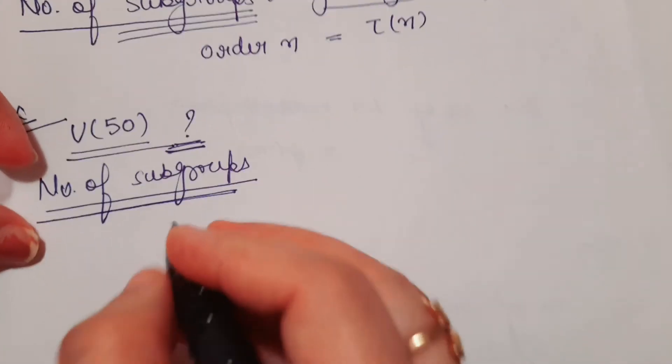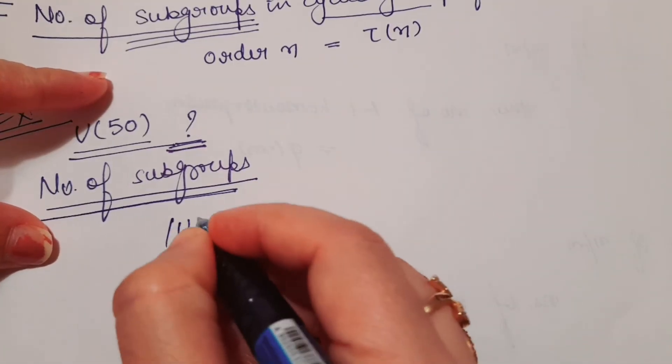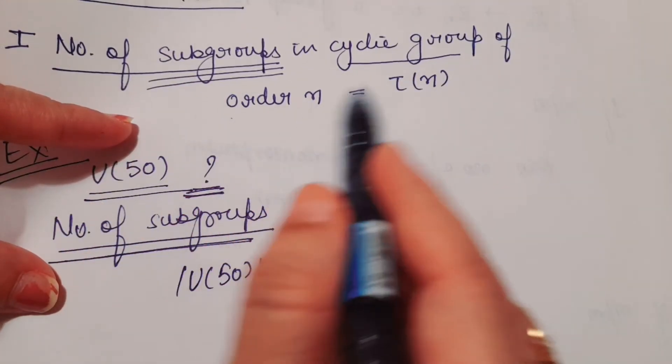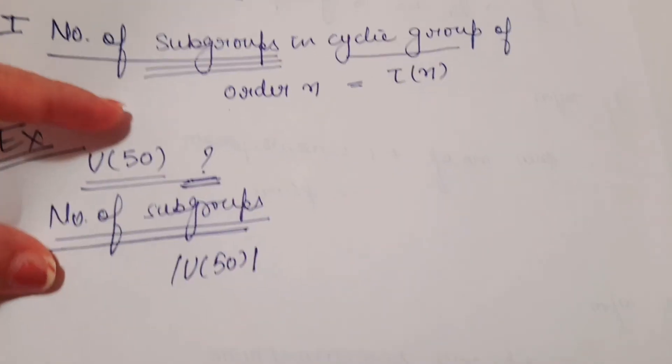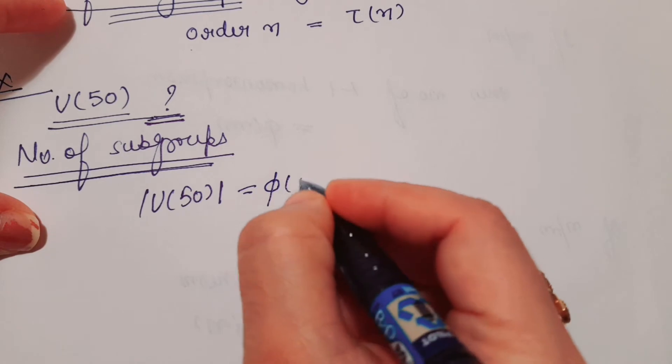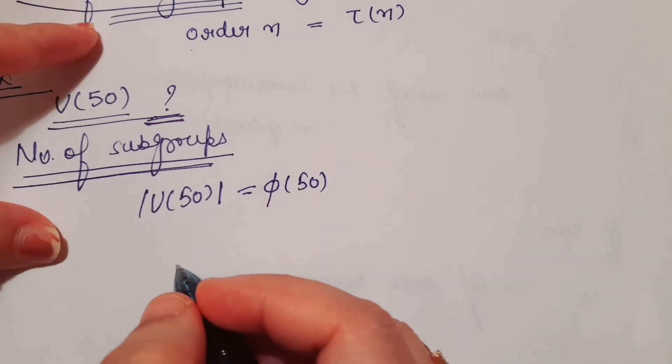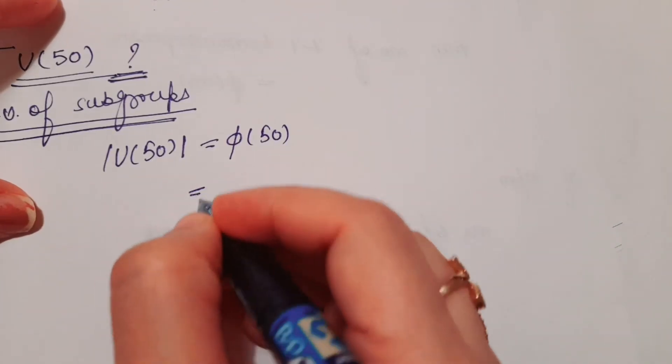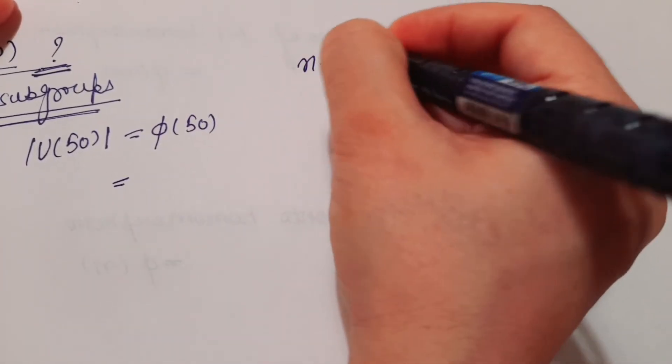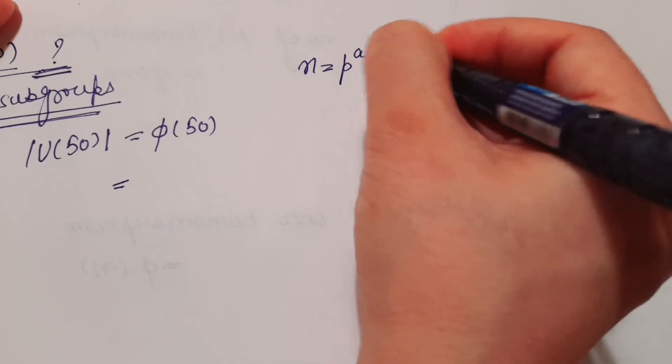For that, we should know the order of U(50), because the number of subgroups in a cyclic group of order n is τ(n). So what is the order of U(50)? The order of U(50) is φ(50). Can you calculate φ(50)? Yes, easily. If n equals p^a × q^b × r^c and so on, then...